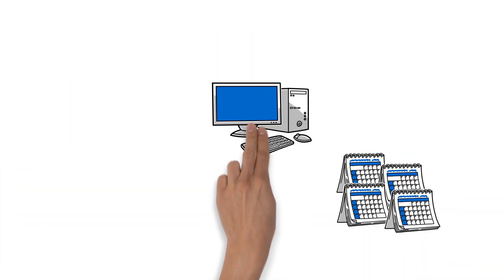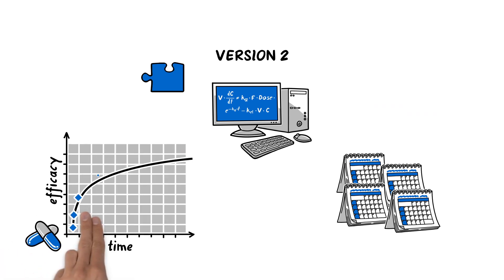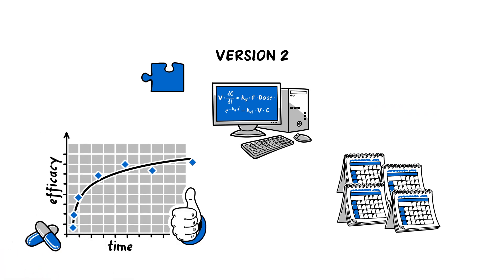It usually takes weeks or months to develop a model depending on its complexity. As new pieces of information become available, models are updated. Once a model is found to properly predict known system behaviors — such as reproducing observed efficacy to current treatments — it is then used for simulation.